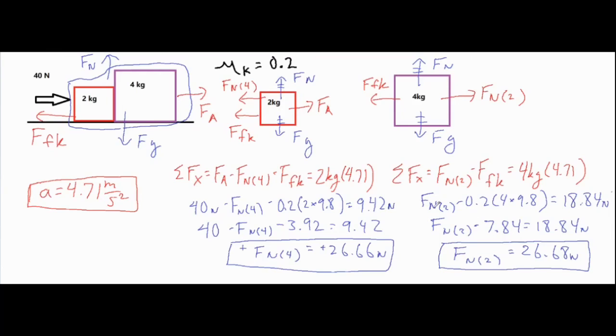For the second one, you have the normal force from the 2 kilogram block, and then same thing, subtracting mu times the normal force to get the coefficient of kinetic friction, except you use the mass of 4 for this one. That equals the mass times that original acceleration we got, which is 18.84. Add 7.84 to each side and you get 26.68 newtons, which is slightly higher than the first one only because of some rounding that was done throughout the process.